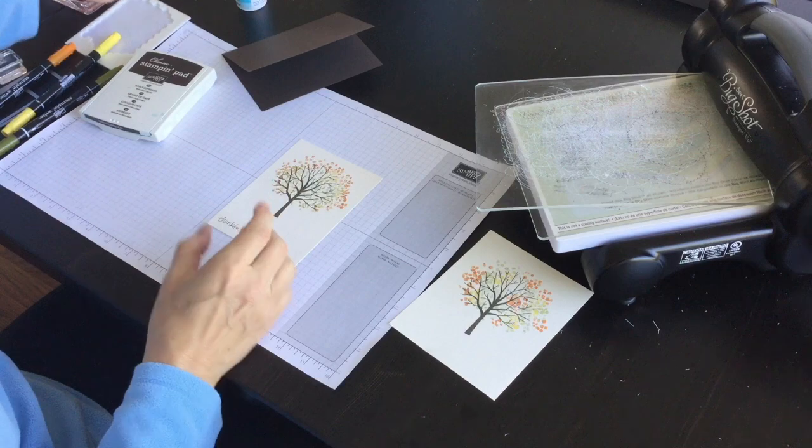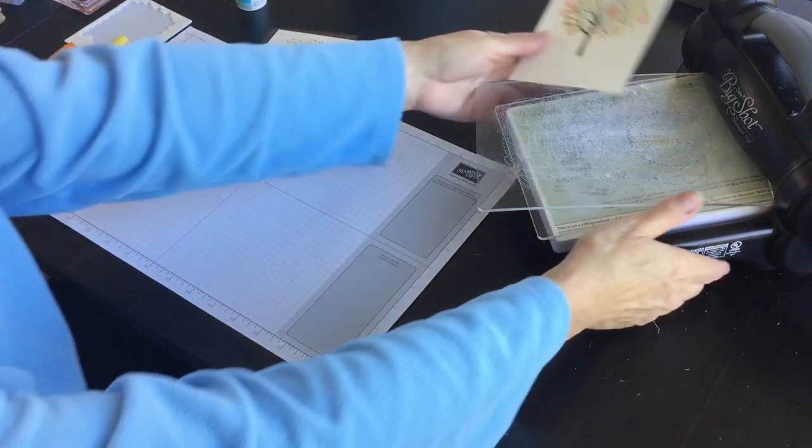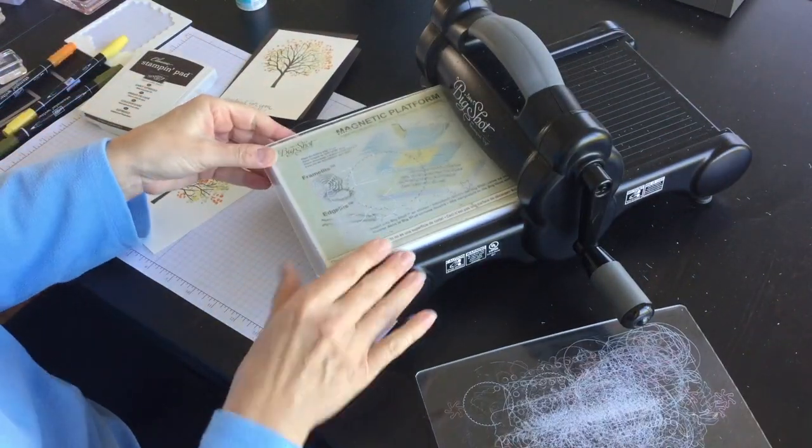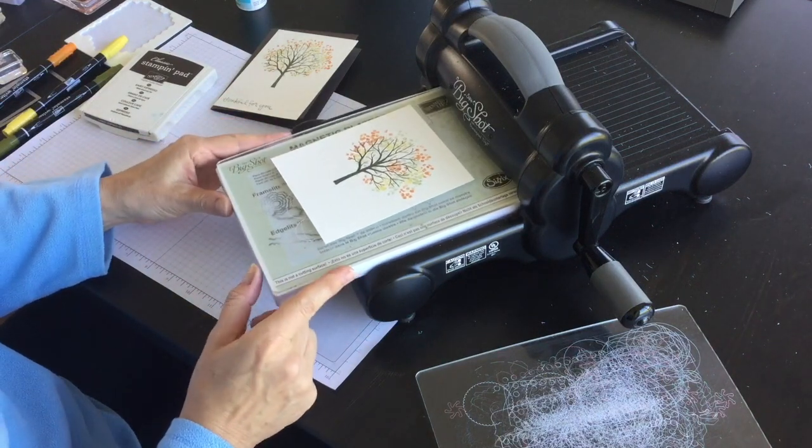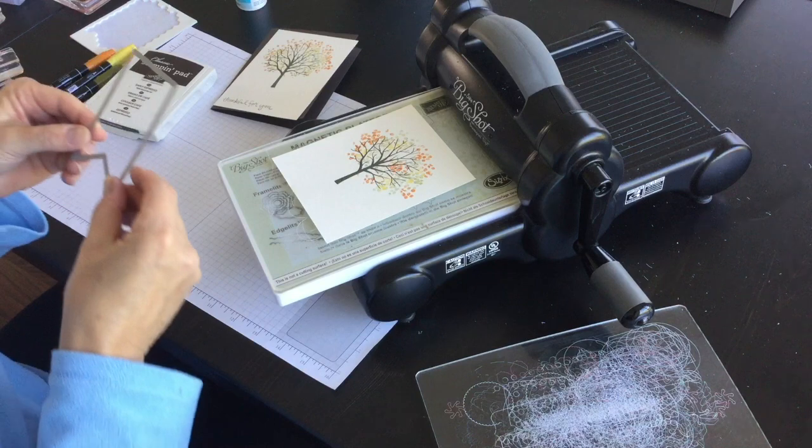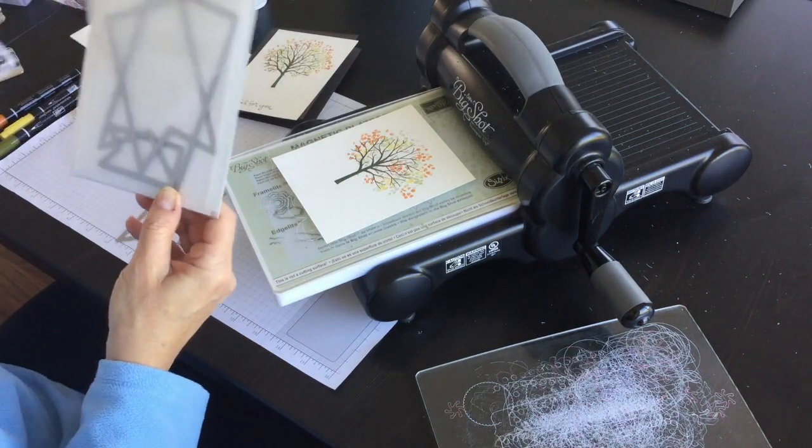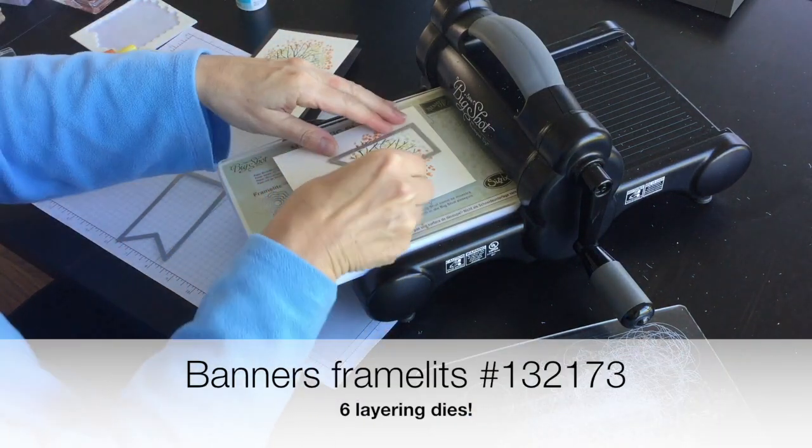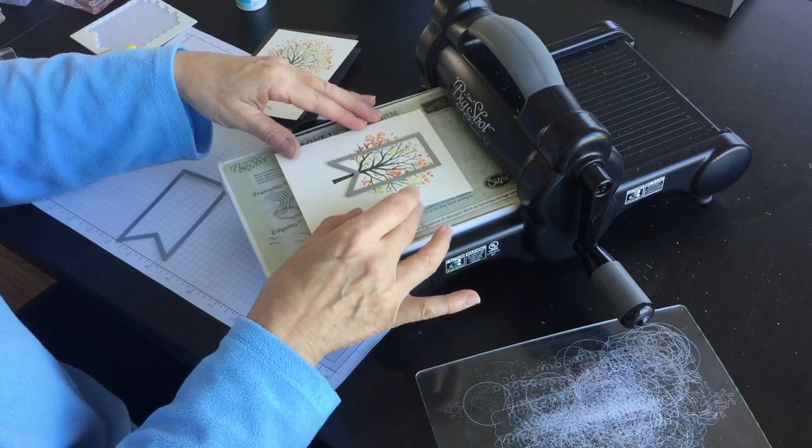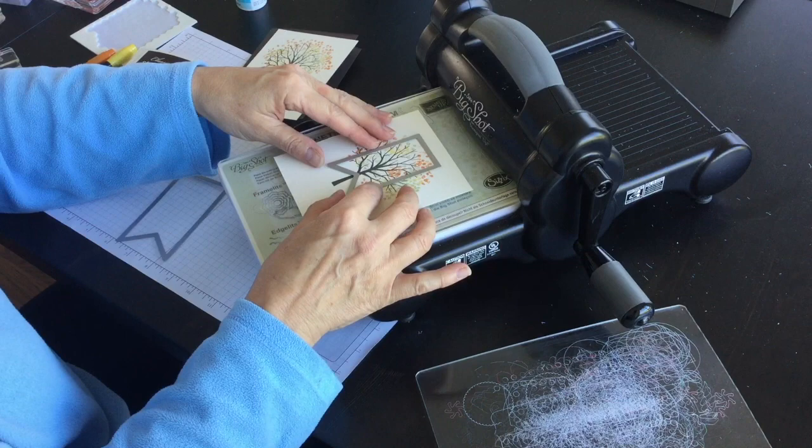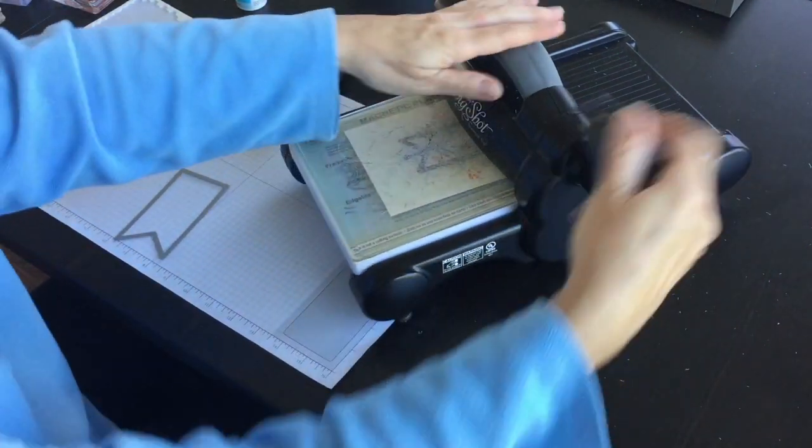Now what I'm going to do is I'm going to bring in my big shot and I've got my magnetic platform, my bottom standard cutting pad and then I've got one of the banners framelits. I'm actually going to use a smaller one and I'm going to cut this layer like so, that will be like a banner piece. I'm going to die cut a banner of the stamped image that I've got.